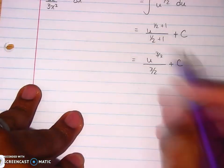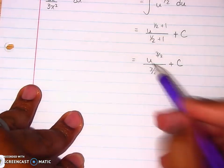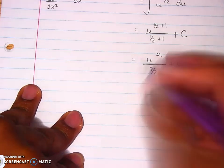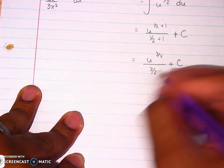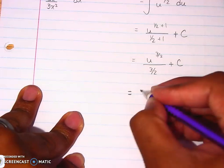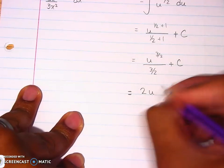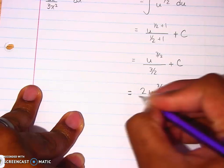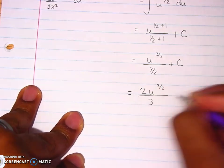Alright, and then again, before we do the substitute U back in there, to simplify this down, we know we keep change flip a little bit, so we multiply by reciprocal. So that means here we get 2U to the 3 halves power all over 3 plus C.